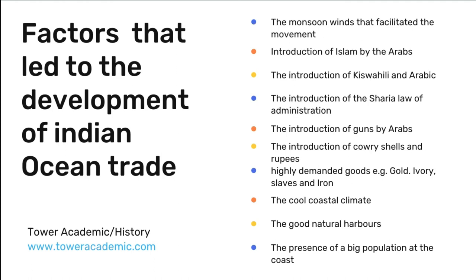Factor three was the introduction of Kiswahili and Arabic as means of communication, which aided the exchange of goods at the East African coast. Factor four was the introduction of Sharia law by Arabs as a system of administration — its strict enforcement against theft and lawlessness helped control and regulate trade at the coast. Factor five was the introduction of guns by the Arabs, which were used for protection and for hunting slaves and ivory.